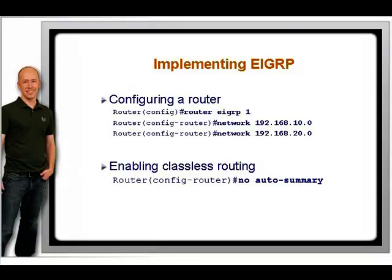Similar to RIP version 2 and OSPF, EIGRP can be a classless routing protocol. By default, it is classful. To enable classless routing, type this command under the routing process.